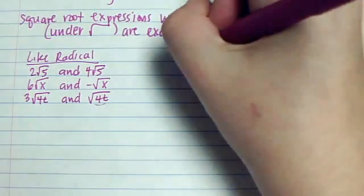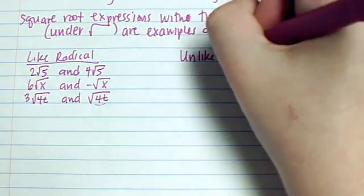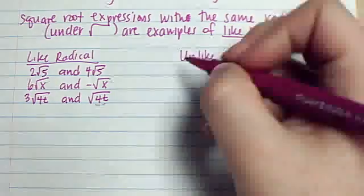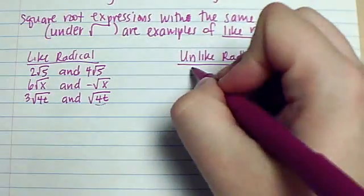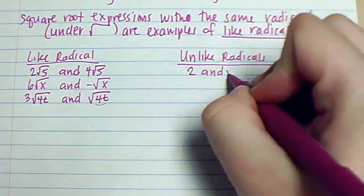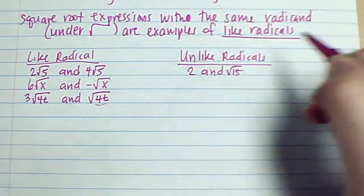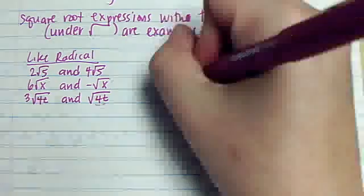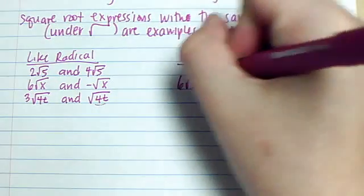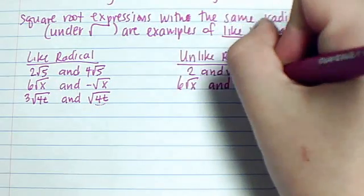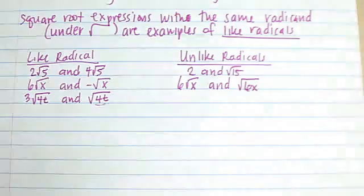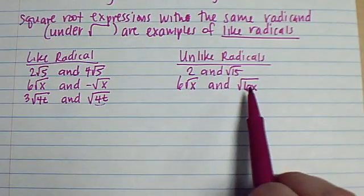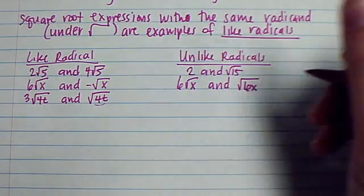Now let's look at some that are not — unlike radicals. These we cannot combine. That would be like if I had 2 and root 15; if I wanted to add those together, I wouldn't be able to — they're not the same. Or 6 root x and root 6x. Again, those are not the same: this is x, this is 6x — not the same number.